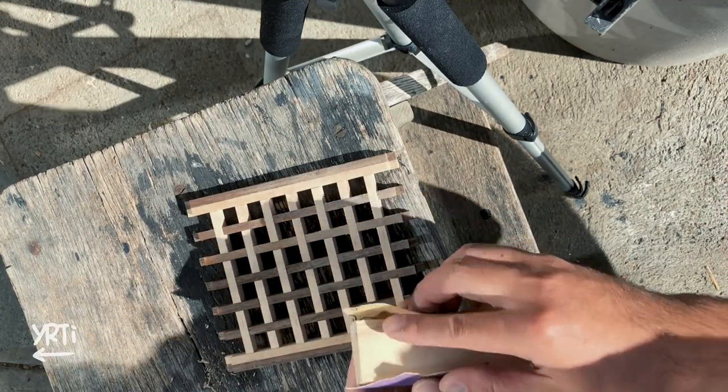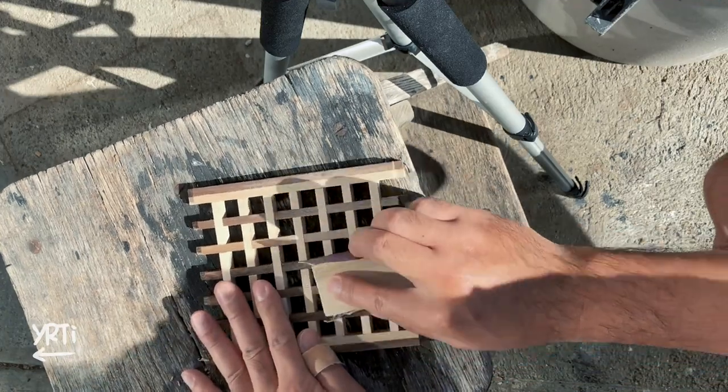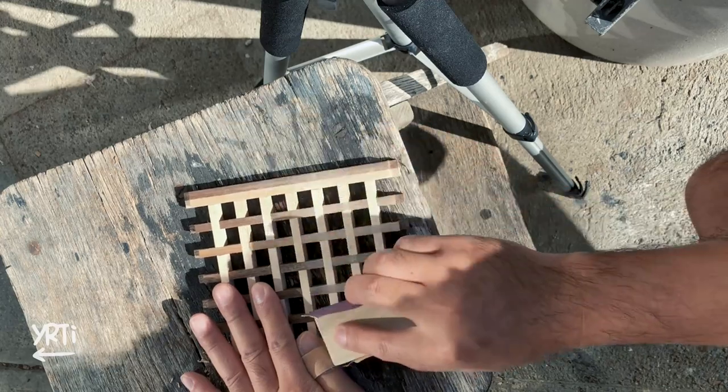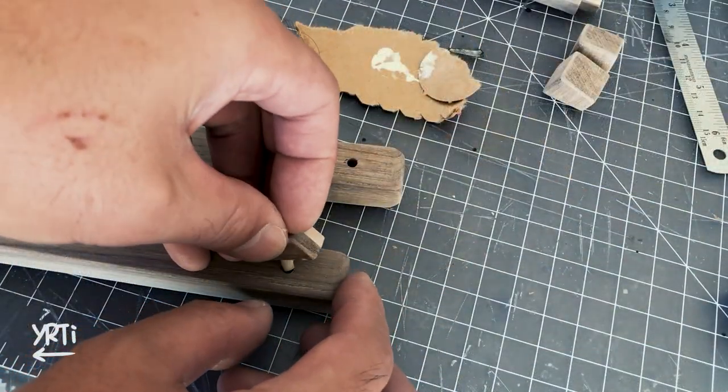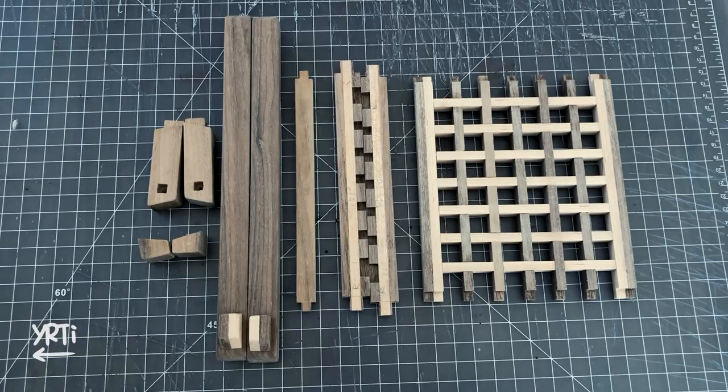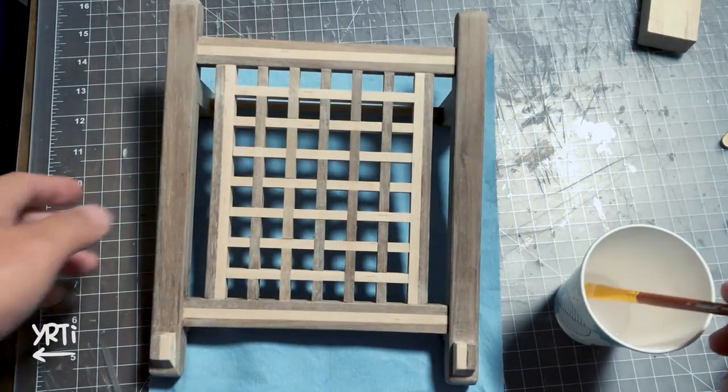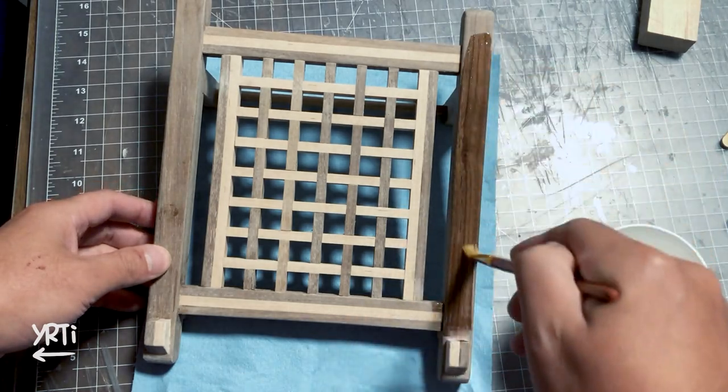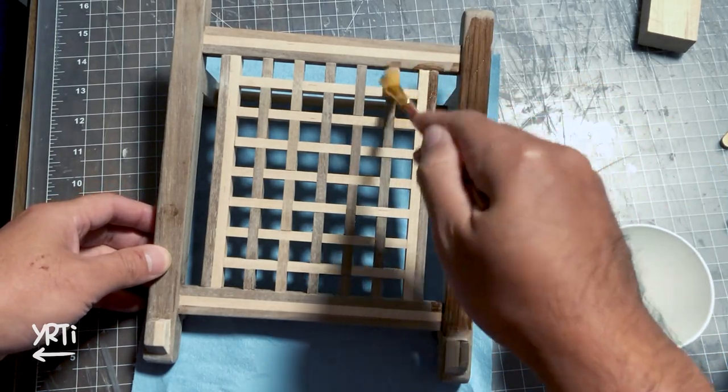Before assembling the Kumiko, I should chamfer the Kumiko strips a little bit. Then I put the stop block, assembled everything, and put my favorite Howard oil. Okay, let's see the final product again.